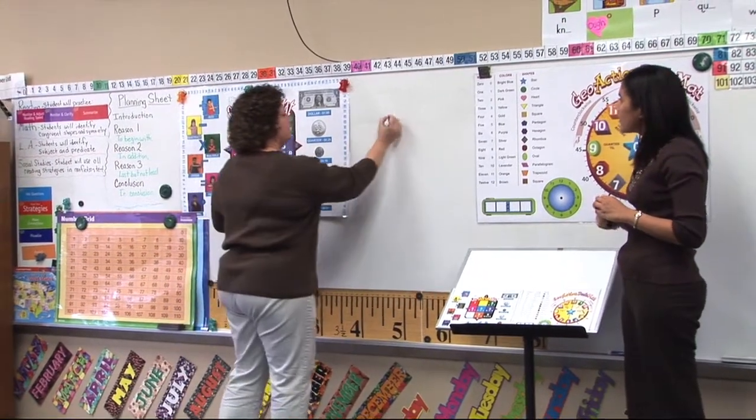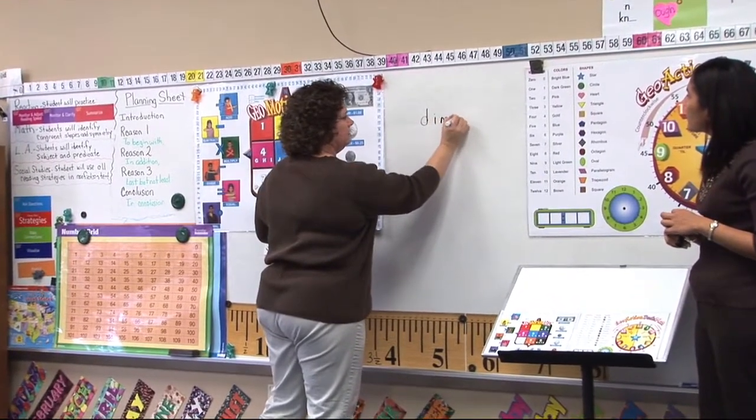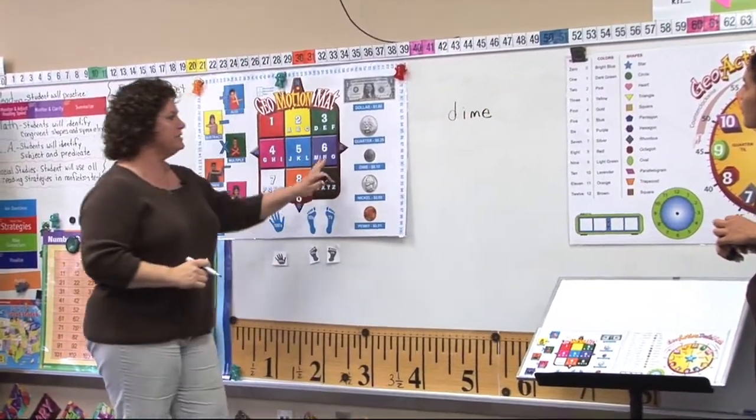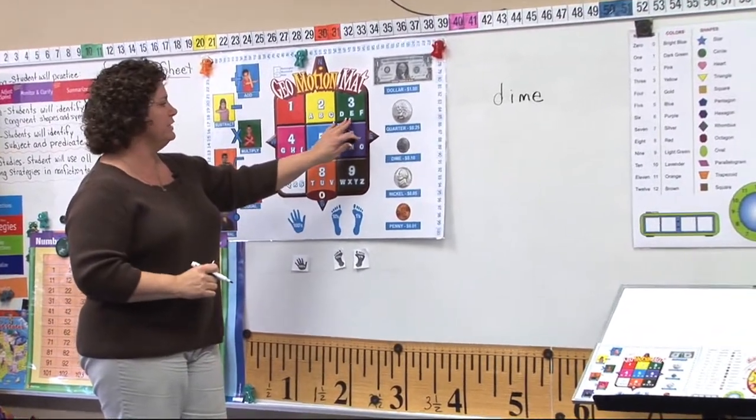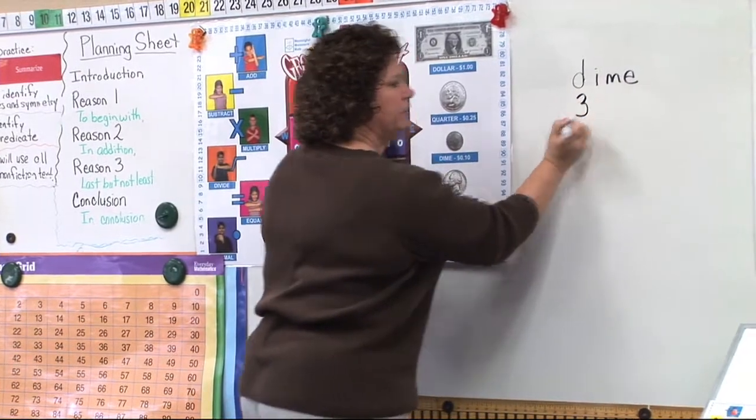the word dime. You would write on their notebook paper D-I-M-E. And whenever you have a cell phone, or at least the older ones, whenever you hit the D, you would hit the letter three one time. So you'd put a three underneath here.